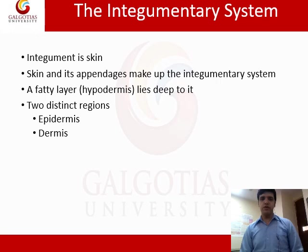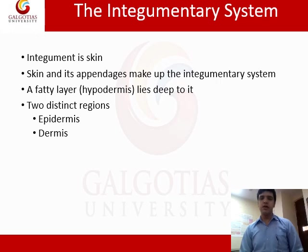Basically, 'integument' is another name for skin. Skin and its appendages make up the integumentary system. It is an organ system in which the main structure is the skin, and apart from that, associated glands, layers, and parts make up the appendages.